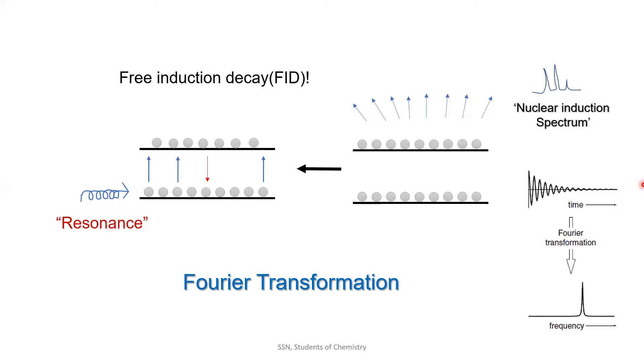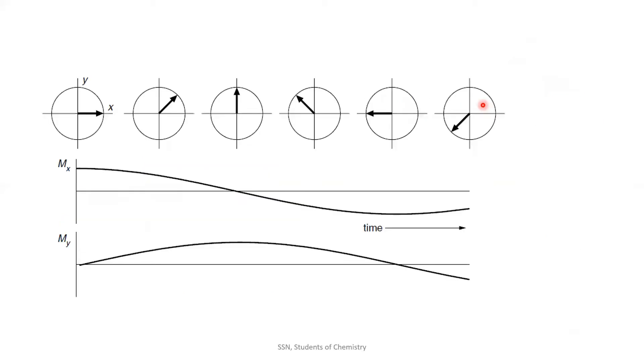How do we get a signal from the relaxation process? Here, I am going to explain this with the help of transverse relaxation. In transverse relaxation, our magnetization would revolve around XY axis.